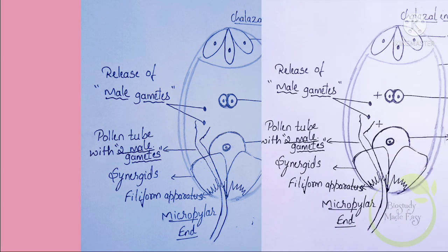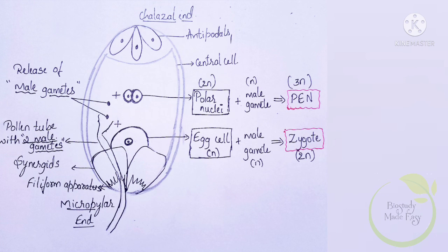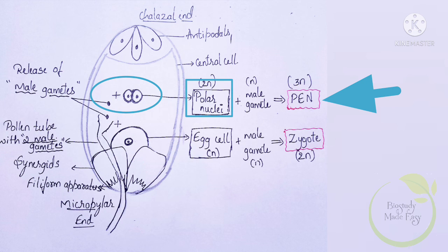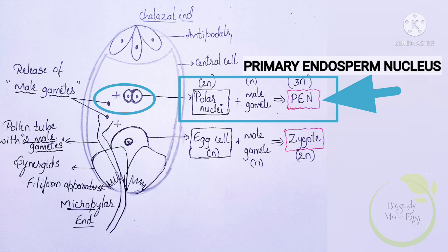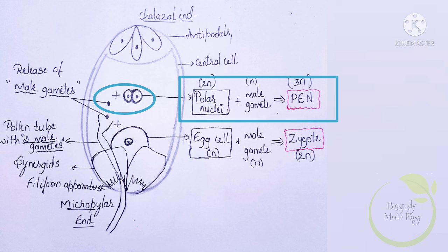Let us see how these two male gametes fuse with these cells. First, when one male gamete fuses with the two polar nuclei, it forms the Primary Endosperm Nucleus, or PEN. The polar nuclei together are diploid — there are two nuclei, making it diploid. Male gametes are always haploid in nature. So when the haploid male gamete fuses with the diploid polar nuclei, the result is a triploid Primary Endosperm Nucleus. This is the first fertilization.